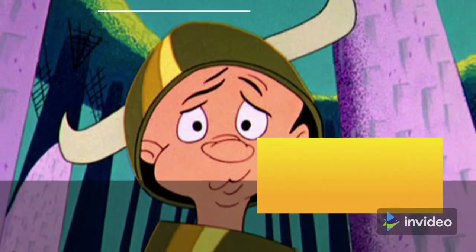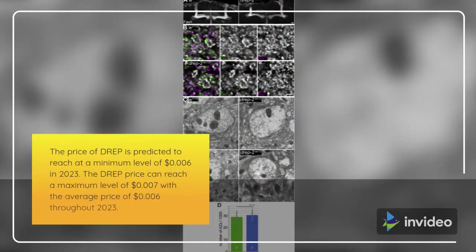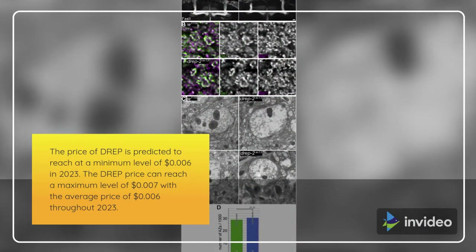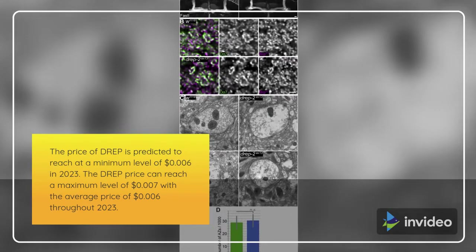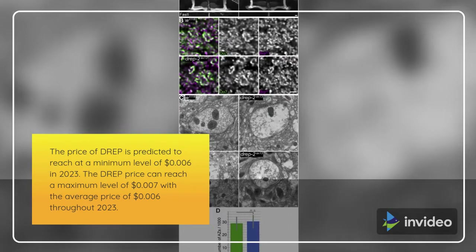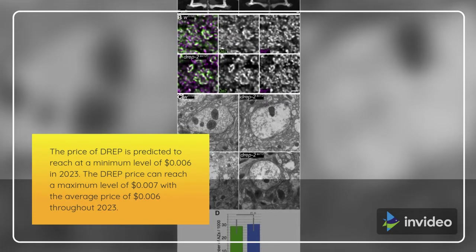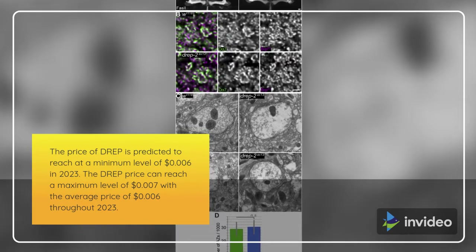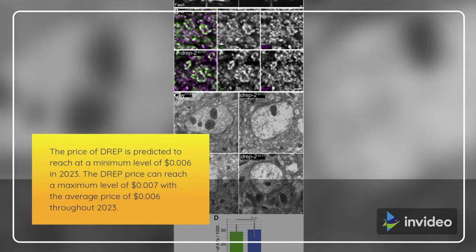DREP Price Prediction 2023. The price of DREP is predicted to reach a minimum level of $0.006 in 2023. The DREP price can reach a maximum level of $0.007 with the average price of $0.006 throughout 2023.